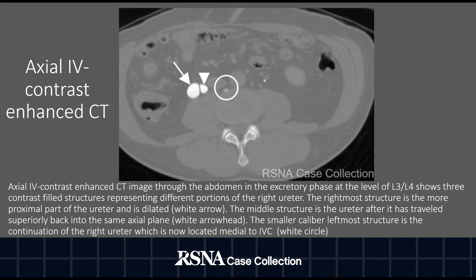Axial IV contrast-enhanced CT image through the abdomen in the excretory phase at the level of L3-L4 shows three contrast-filled structures representing different portions of the right ureter. The rightmost structure is the more proximal part of the ureter and is dilated, as indicated by the white arrow. The middle structure is the ureter after it has traveled superiorly back into the same axial plane, as indicated by the white arrowhead. The smaller caliber leftmost structure is the continuation of the right ureter, which is now located medial to the IVC, as indicated by the white circle.